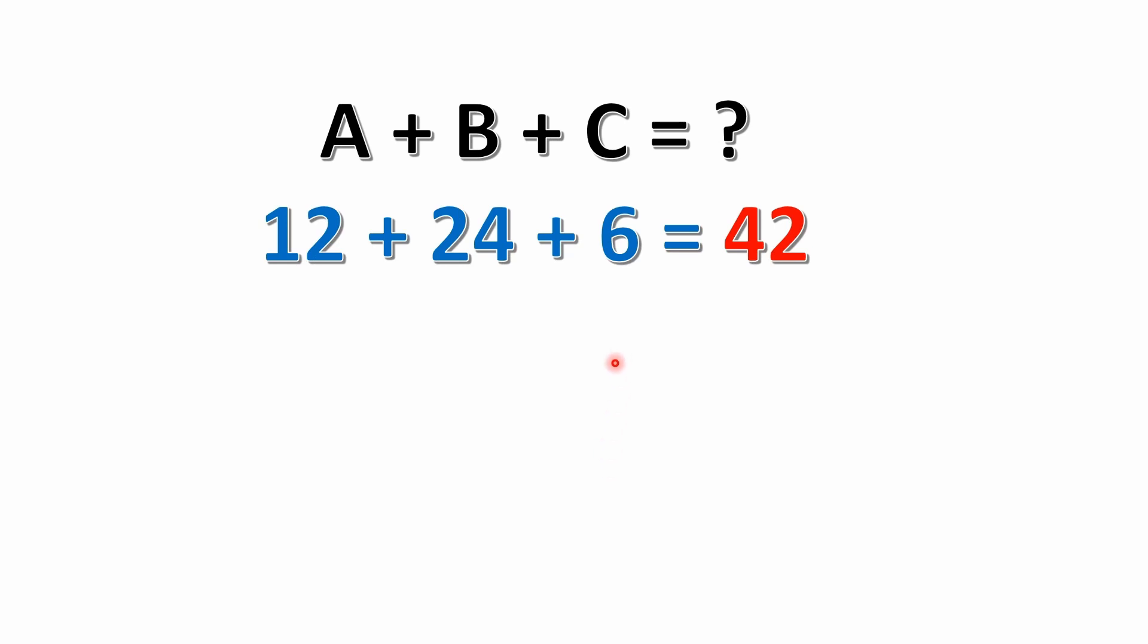And then what we're looking for the answer to, we're looking for the answer to this: A plus B plus C. Well, now it's really simple. We've solved for each one of these variables. We know what their values are. So it's 12 plus 24 plus 6. Well, 12 and 24 is 36. 36 plus 6 is 42. So the answer to the problem would be 42.